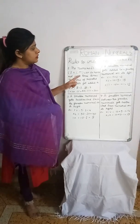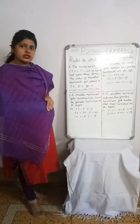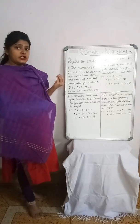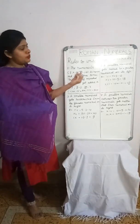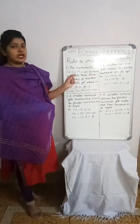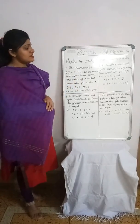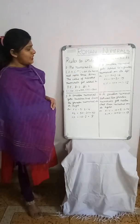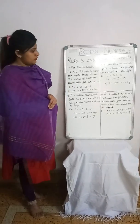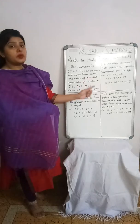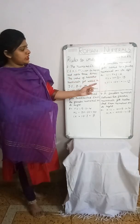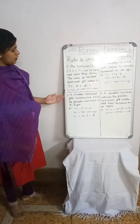Rule 2: A smaller numeral gets added to a greater numeral on its left. This means if a smaller numeral follows a greater numeral, we add both. For example, VI: V stands for 5 and I stands for 1, so 5 + 1 = 6. XV: X is 10 and V is 5, so 10 + 5 = 15. XIII: X is 10, and we add 1+1+1, giving 10 + 3 = 13.